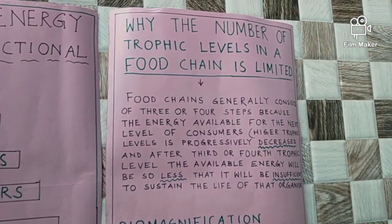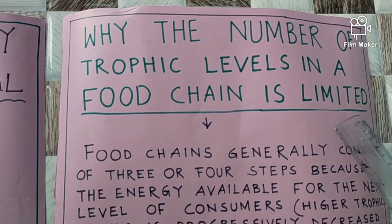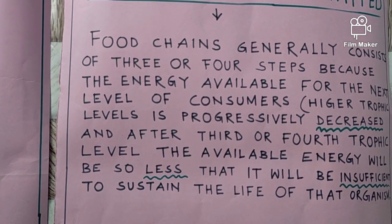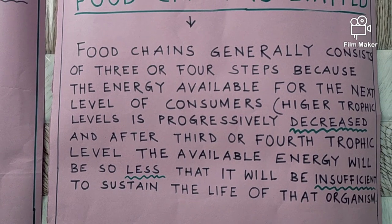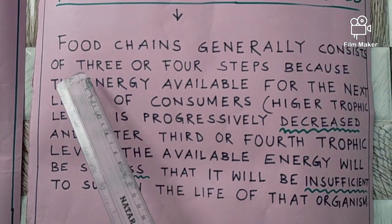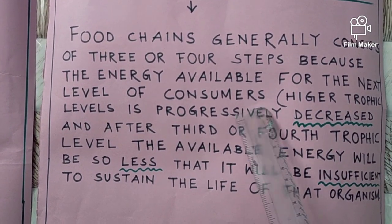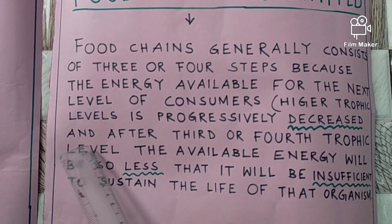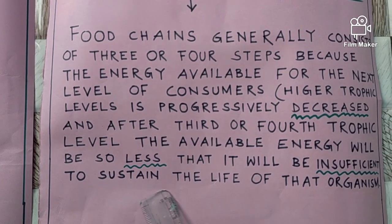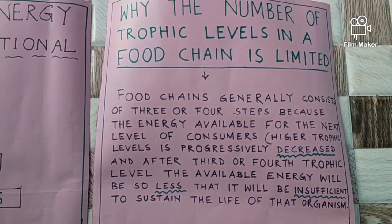Now come to the next question — this question comes in your exam also. Why is the number of trophic levels in a food chain limited? Food chains generally consist of 3 or 4 trophic levels because the energy available for the next level of consumers is progressively decreased, and after the 3rd or 4th trophic level the available energy will be so less that it will be insufficient to sustain the life of that organism. That is why the number of trophic levels in a food chain is limited.